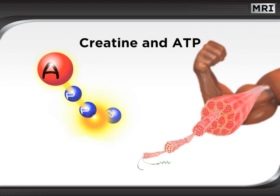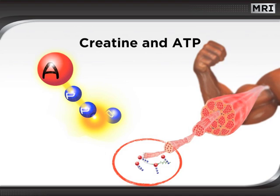During muscle contractions, the high-energy bonds are broken, releasing energy. The energy released from ATP drives the interaction between actin and myosin fibers, the actual contractile proteins in muscle tissue. For this reason, ATP molecules are sometimes called the energy machines of muscle.